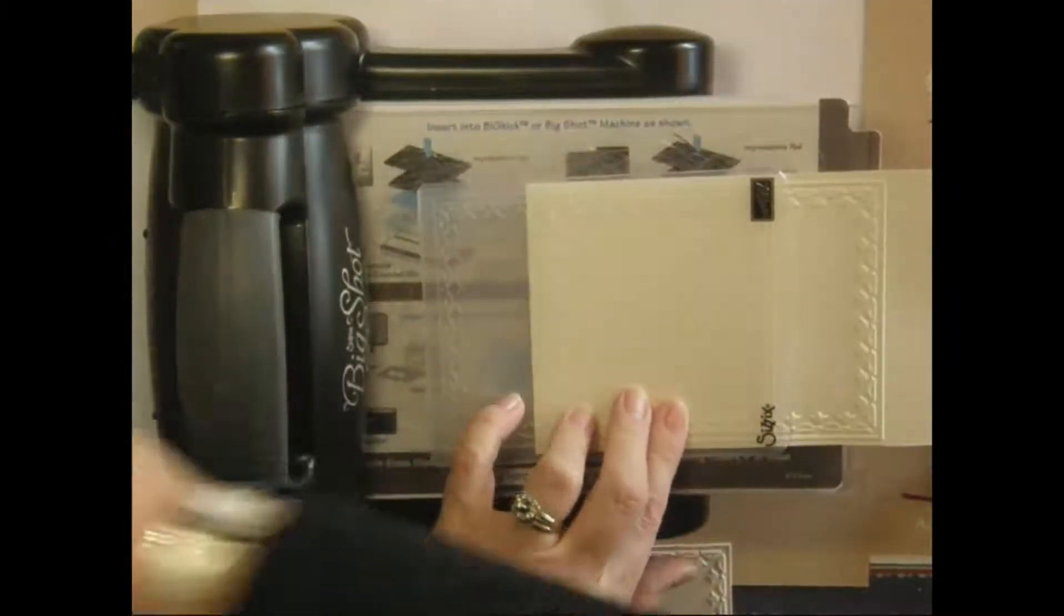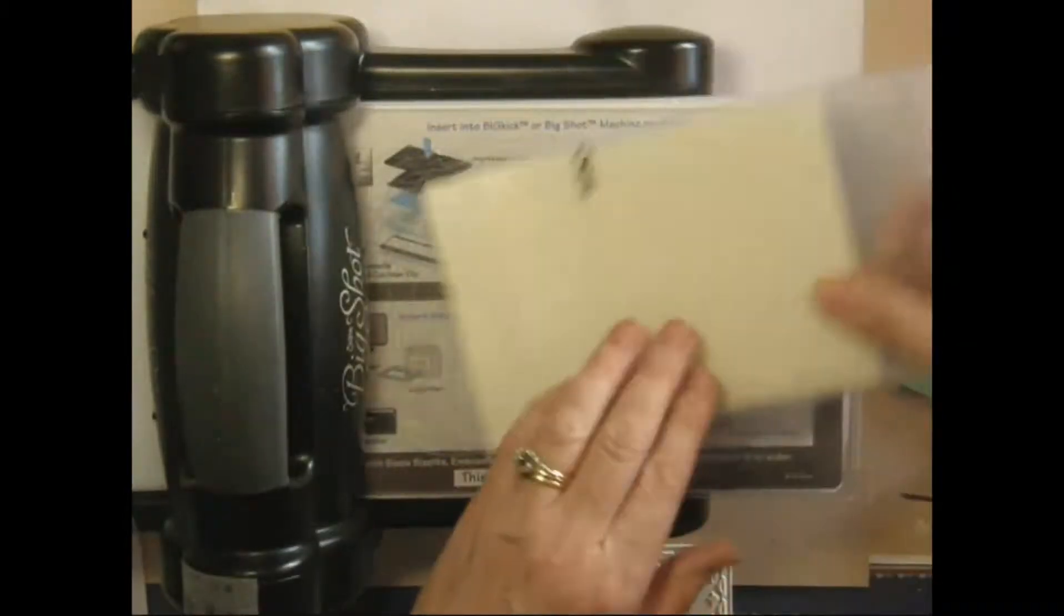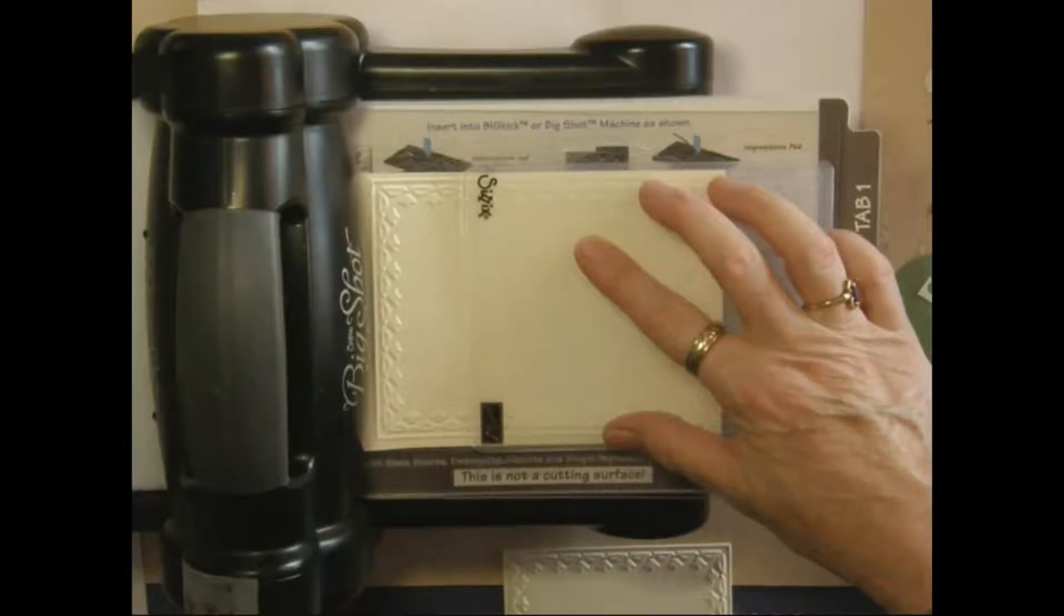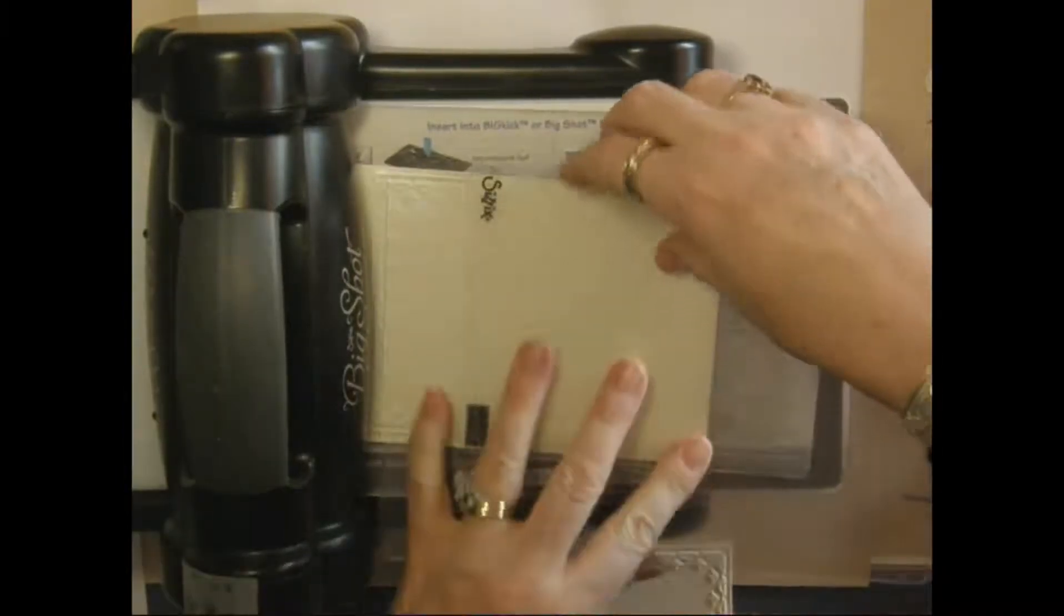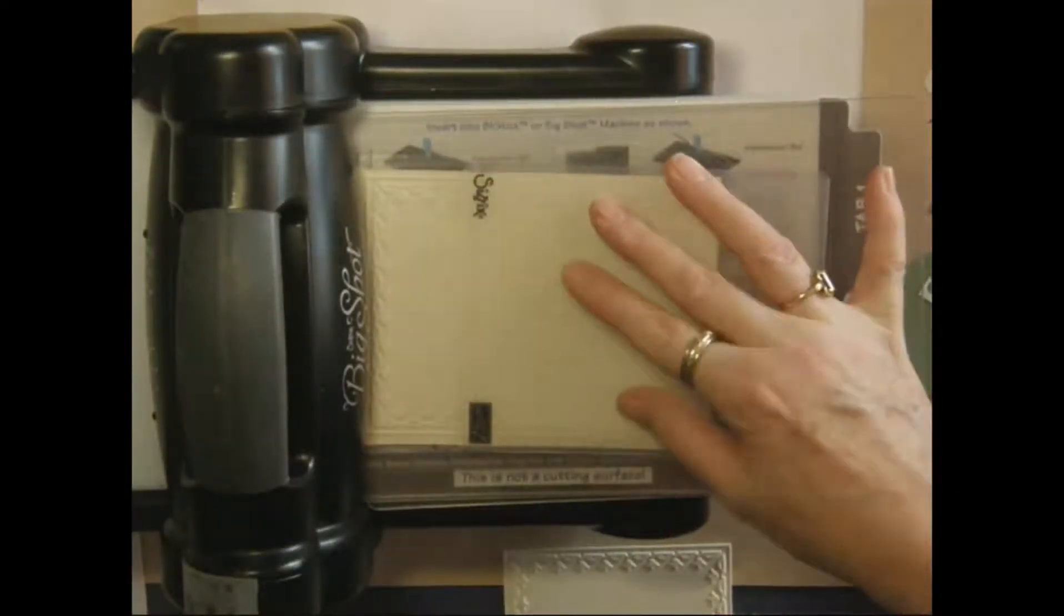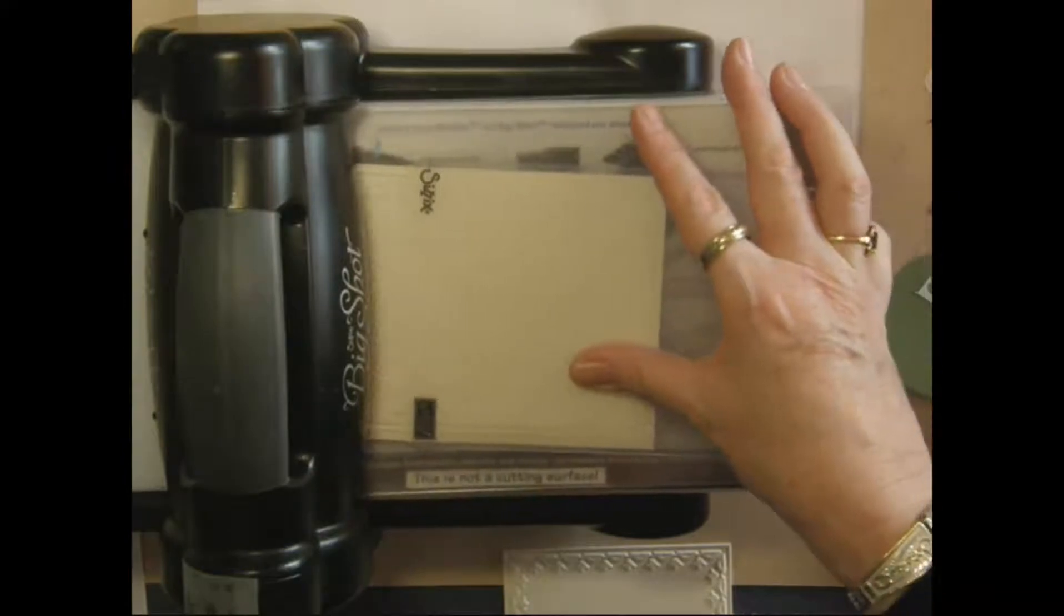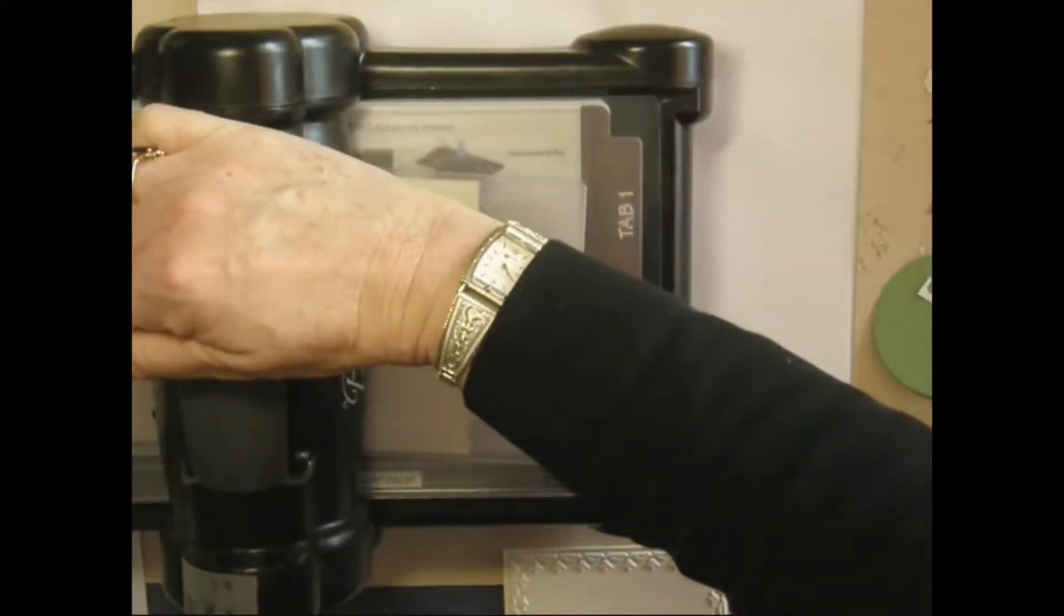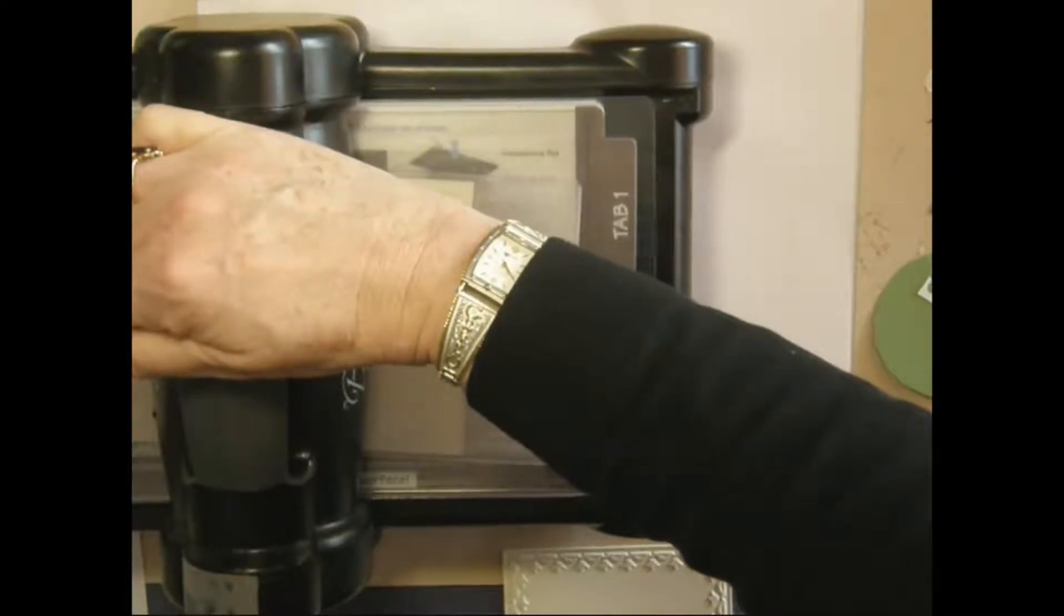Oops. I just need to turn this around so that I'm only running it through at the very beginning. So you just start it just to where it crimps that first edge. And then back it off.